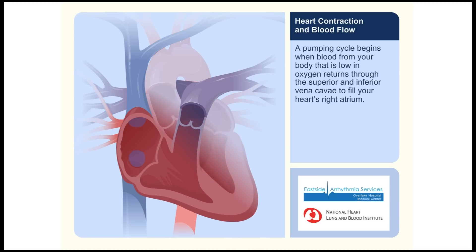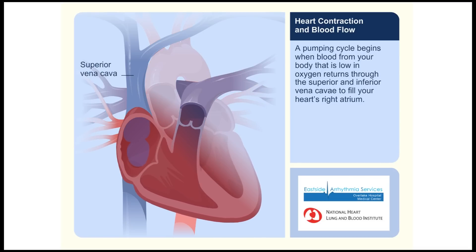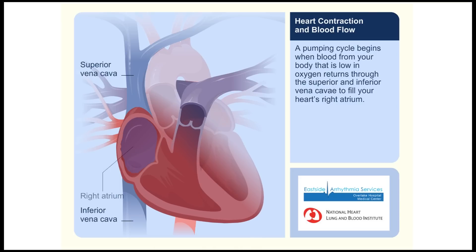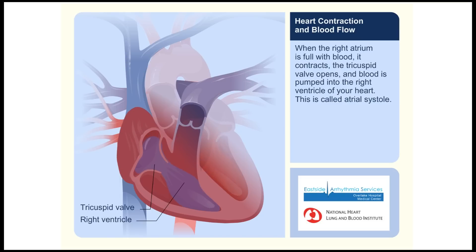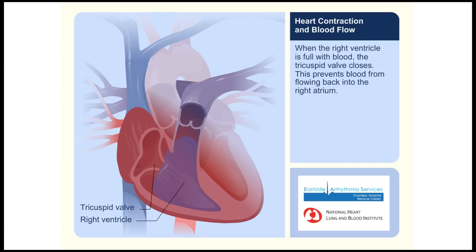A pumping cycle begins when blood from your body that is low in oxygen returns through the superior and inferior vena cava to fill your heart's right atrium. When the right atrium is full with blood, it contracts, the tricuspid valve opens, and the blood is pumped into the right ventricle. This is called atrial systole.